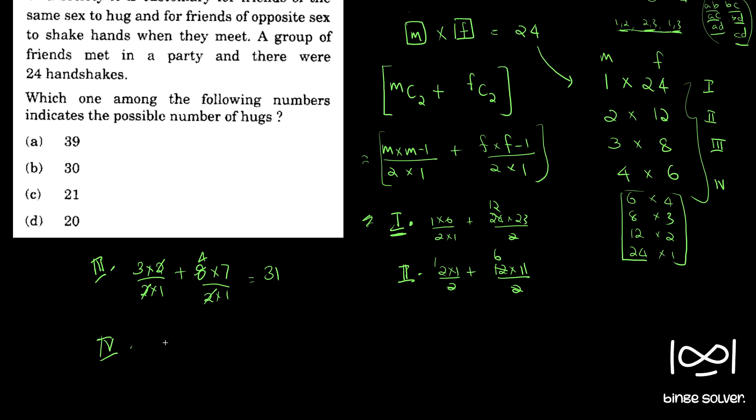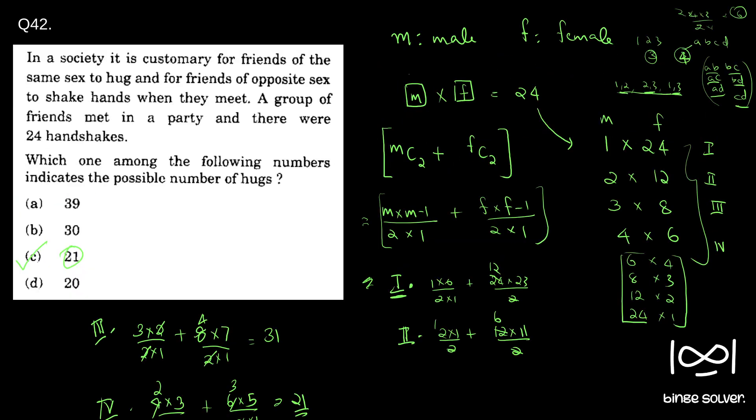Now we will check 4. 4 is 4 and 6. So 4 into 3 by 2 into 1 plus 6 into 5 by 2 into 1. So 2, 3. So 15 plus 6, which is 21. So we have a 21 here. So option C is the correct answer. So we got our answer for question 42, option C.